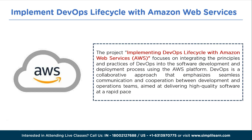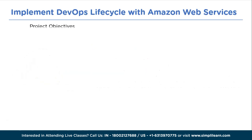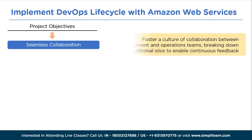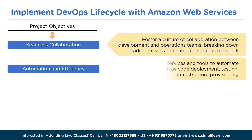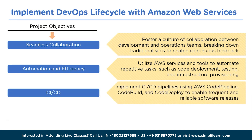The project objectives are as follows. The first is seamless collaboration: foster a culture of collaboration between development and operations teams, breaking down traditional silos to enable continuous feedback and improvement throughout the software development process. The next is automation and efficiency: utilize AWS services and tools to automate repetitive tasks such as code deployment, testing, and infrastructure provisioning to improve efficiency and reduce manual errors. The next is CI/CD: implement CI/CD pipelines using AWS CodePipeline, CodeBuild, and CodeDeploy to enable frequent and reliable software releases, ensuring faster time to market and better customer satisfaction.